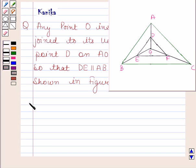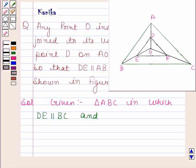Let us now begin with the solution. We will first write down the given information. We are given a triangle ABC in which DE is parallel to AB and EF is parallel to BC. We have to prove that DF is parallel to AC.